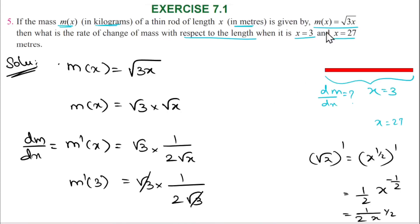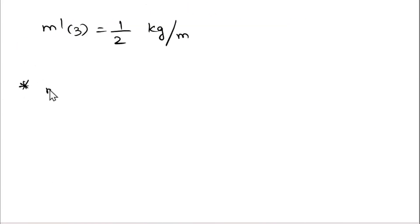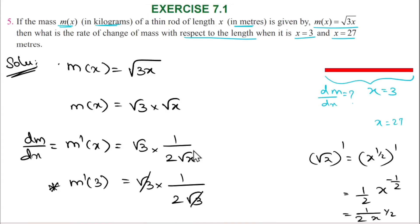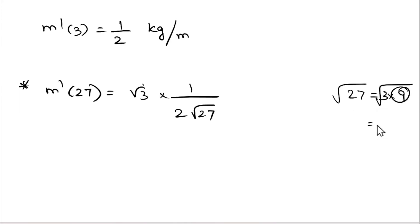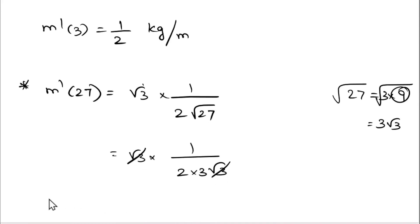Next, we find m dash of 27, where x is equal to 27. Substituting: root 3 into 1 by 2 into root 27. Now 27 can be written as 3 into 9, so root 27 equals root of 3 into 9, which is 3 root 3. Then root 3 into 1 by 2 into 3 root 3 — the root 3 terms cancel, leaving 1 by 2 into 3, which is 1 by 6. So m dash of 27 equals 1 by 6 kilograms per meter. This is our required answer.